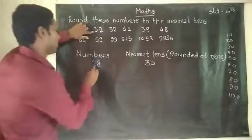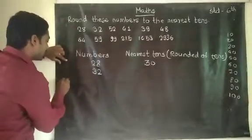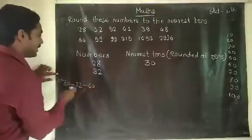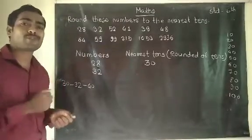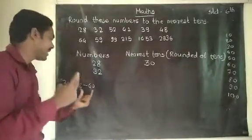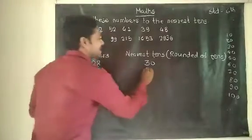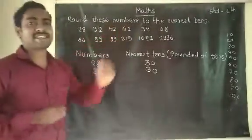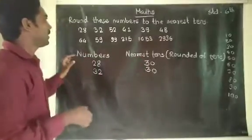The next number is 32. Thirty-two is in between three tens (thirty) and four tens (forty). Which tens is closest to thirty-two? Obviously thirty, because the difference is only two, whereas the difference from forty is eight. So the nearest tens number to thirty-two is thirty. The answer is 30. The numbers below are for your homework.